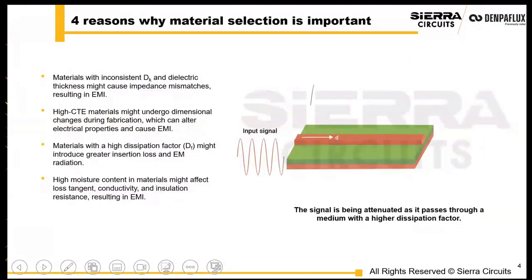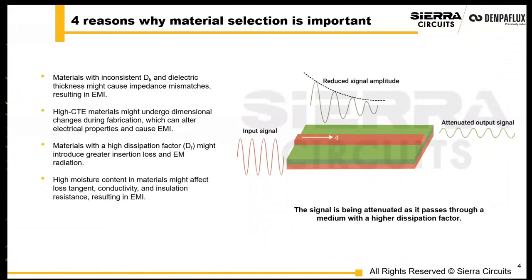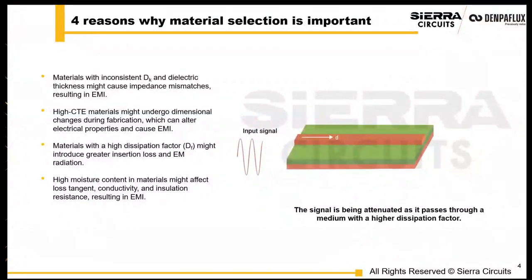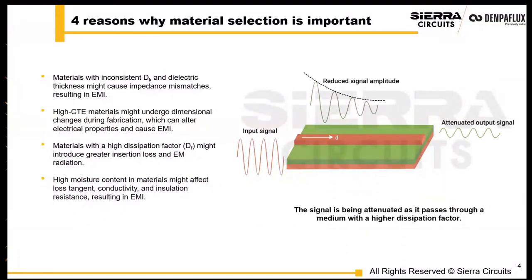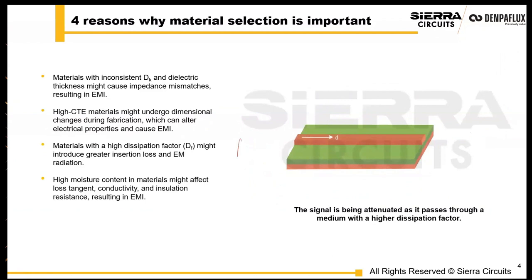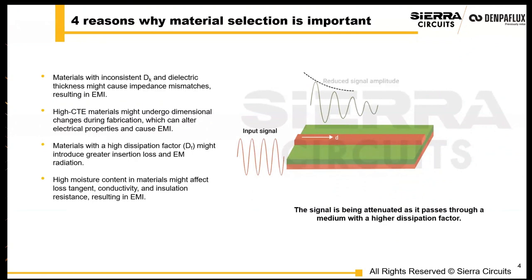Let's discuss the materials. You want materials with very consistent Dk and dielectric thicknesses. When these properties vary, they can cause impedance mismatches across the board, so that's something very important to take into consideration.